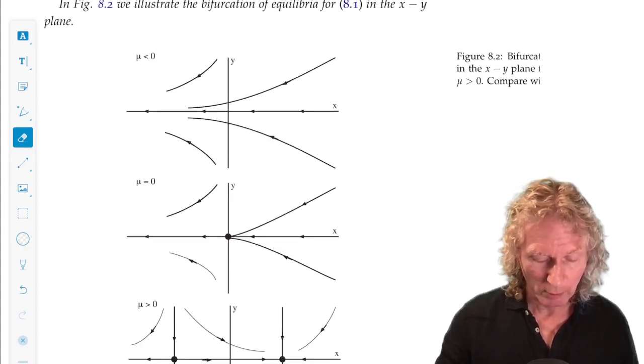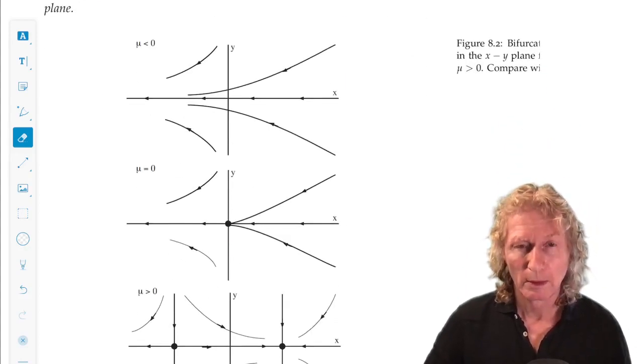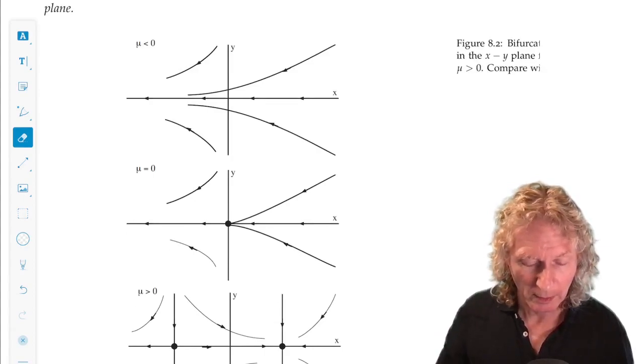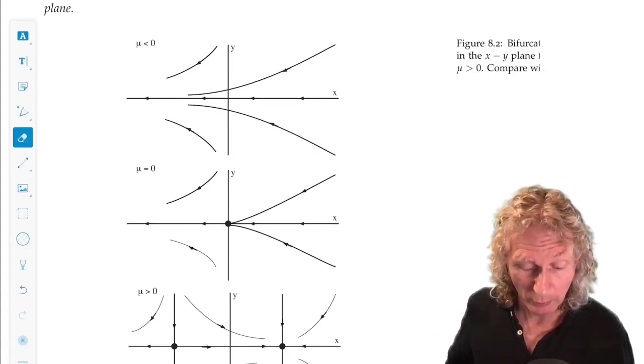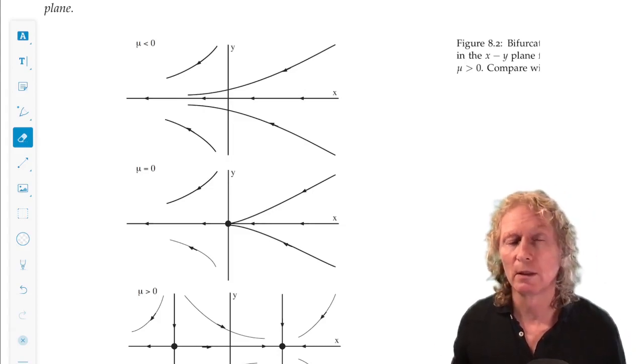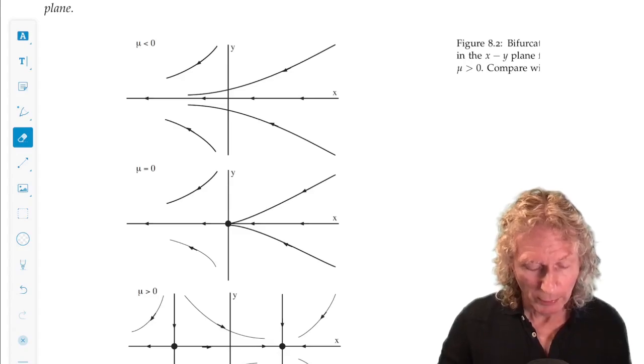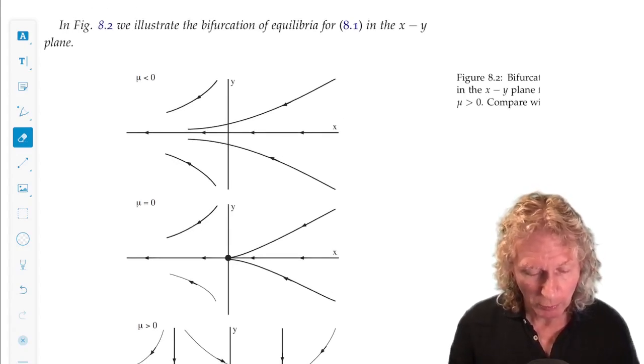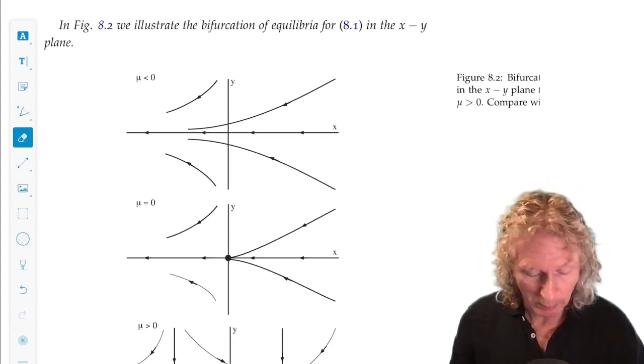Now, you can plot the phase space, the trajectories, typical trajectories in the xy plane for the three distinct values of mu: mu less than zero, no equilibria; mu greater than zero,